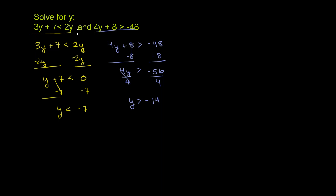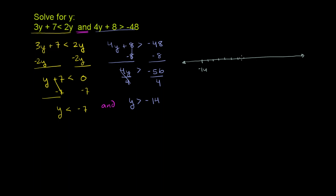And let's remember we have this 'and' here, and y is less than negative 7. So we have to meet both of these constraints. Let's draw them on the number line. So I have my number line over here. And let's say negative 14 is over here — negative 14. So you have negative 13, 12, 11, 10, 9, 8, 7.